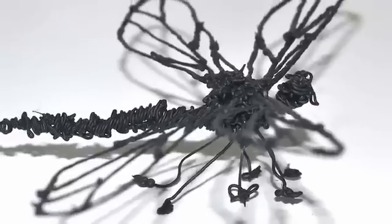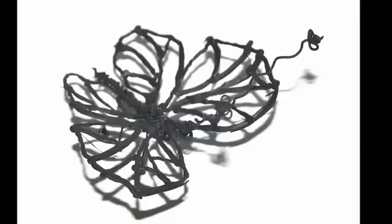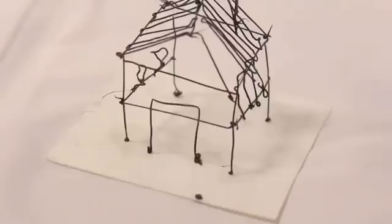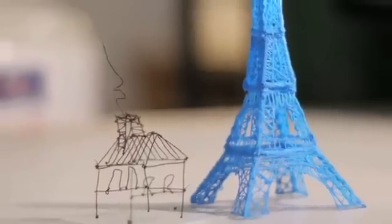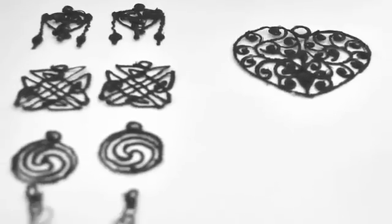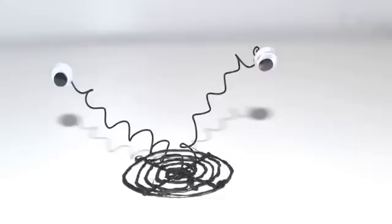So how does it work? 3Doodler uses cutting-edge, patent-pending technology to heat and cool plastic as it passes through the body of the pen. Just like a 3D printer, the plastic cools rapidly and becomes hard. The possibilities are endless.